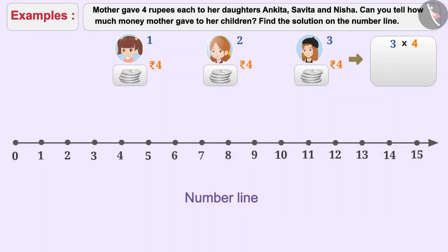First, draw a number line. To represent multiplication on the number line, we always start with zero. The first number of multiplication tells us how many steps are to be taken and the second number tells us how much distance to be kept for each step.